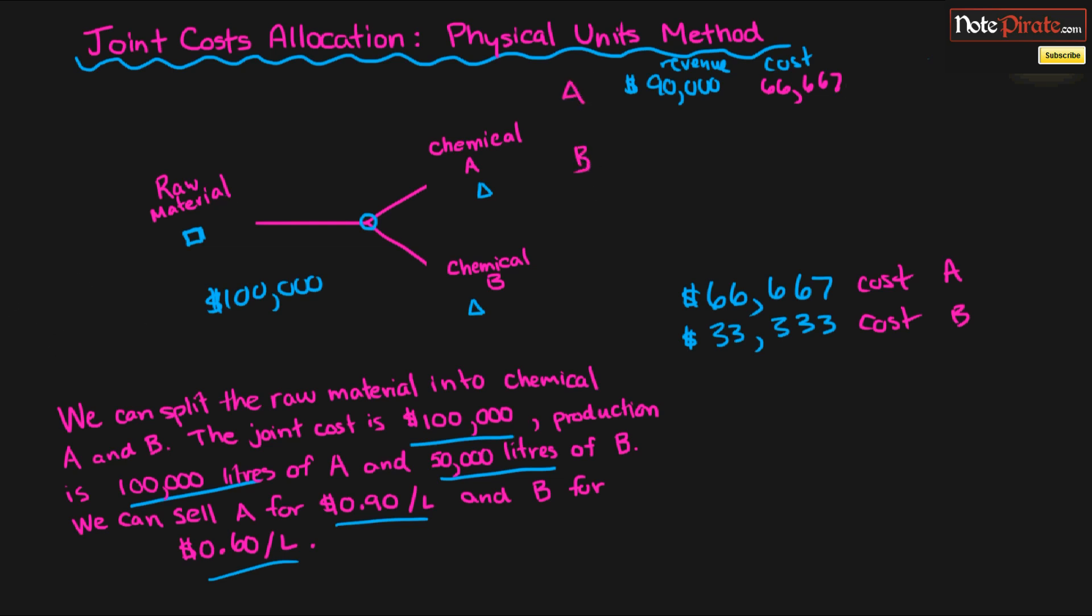While the cost is going to be $66,667, and that's going to be for product A. Now, product B is going to have $0.60 a liter at 50,000 liters. I think that's $30,000 in revenue, and that will be $33,333 for the allocated expense, or the joint cost expense allocated to B.